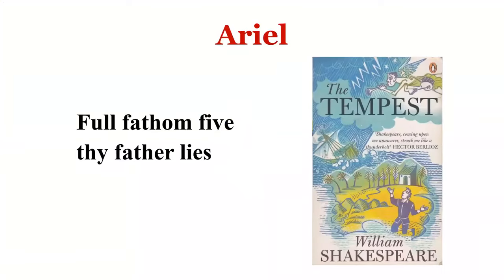A is for Ariel — the airy spirit in Shakespeare's play The Tempest, which is one of his romance plays. The other romance plays include Pericles, The Winter's Tale, and Cymbeline. Ariel was imprisoned in a tree by the witch Sycorax, who was also the mother of Caliban. Ariel was released by Prospero and serves him. Ariel's famous song begins: 'Full fathom five thy father lies' — 'fathom' refers to the depth of water; one fathom equals six feet.